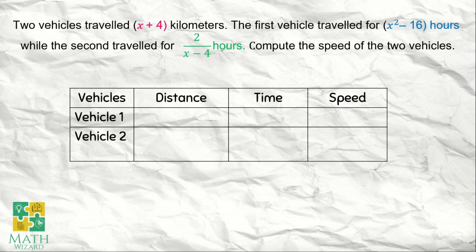For distance, what does it say? They're the same. The traveled distance is x plus 4 kilometers. So for vehicle 1, we have x plus 4 as the distance covered, while vehicle 2 is also x plus 4. That's the traveled kilometers of the two vehicles.